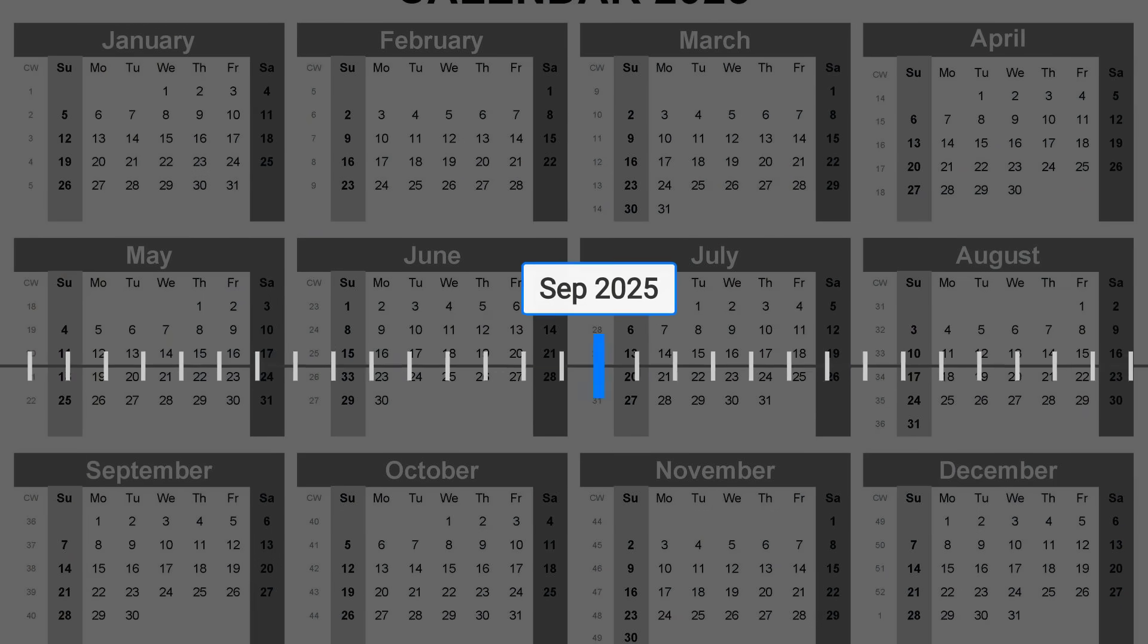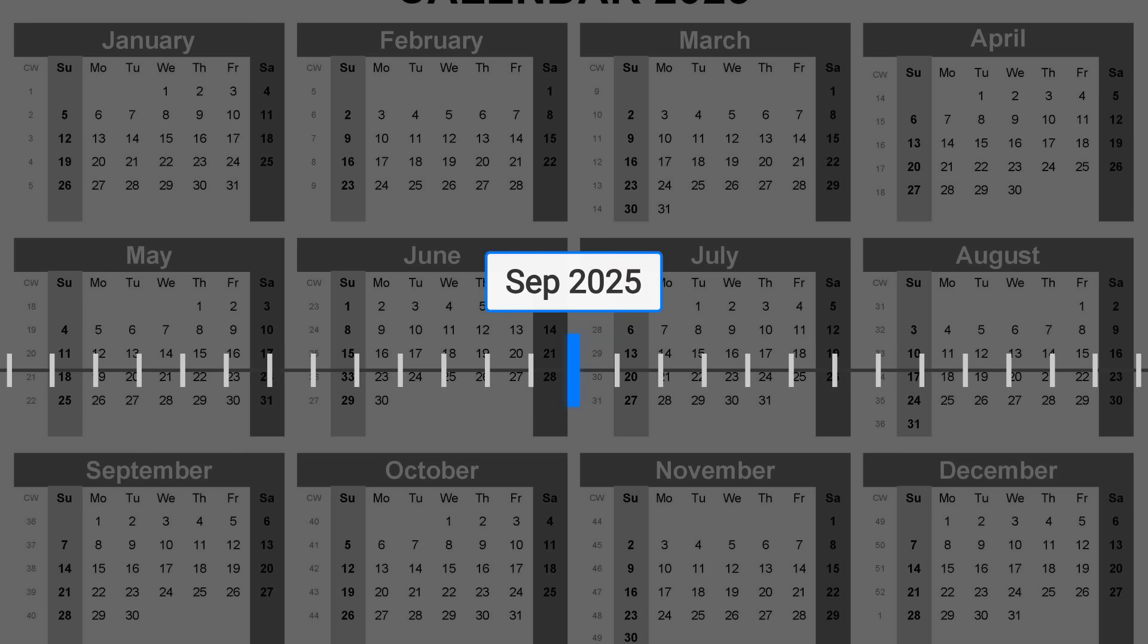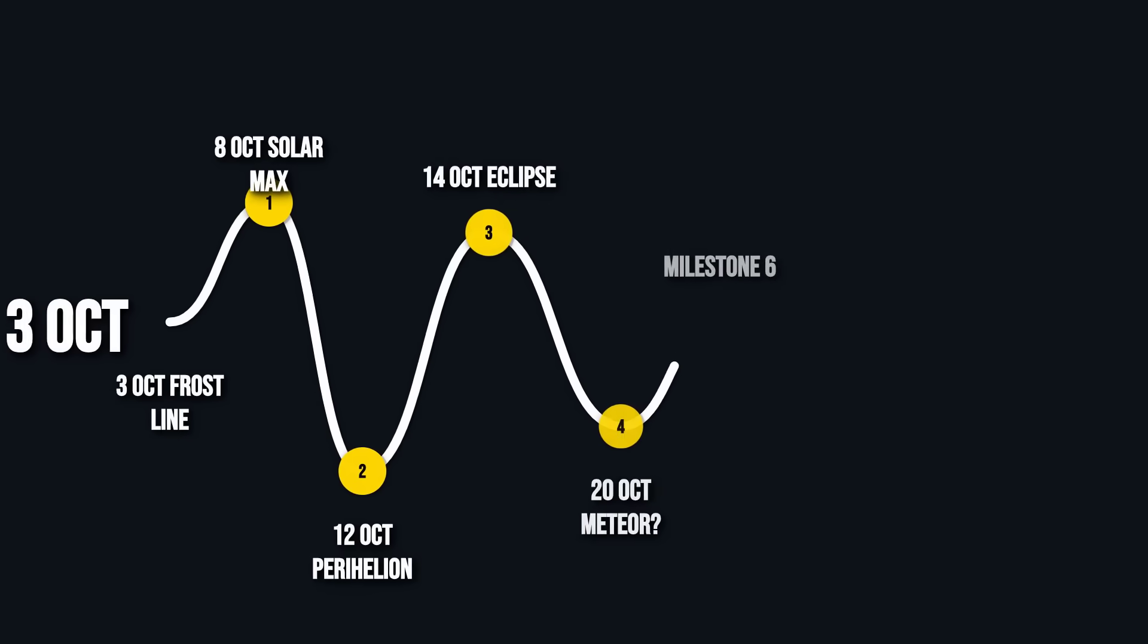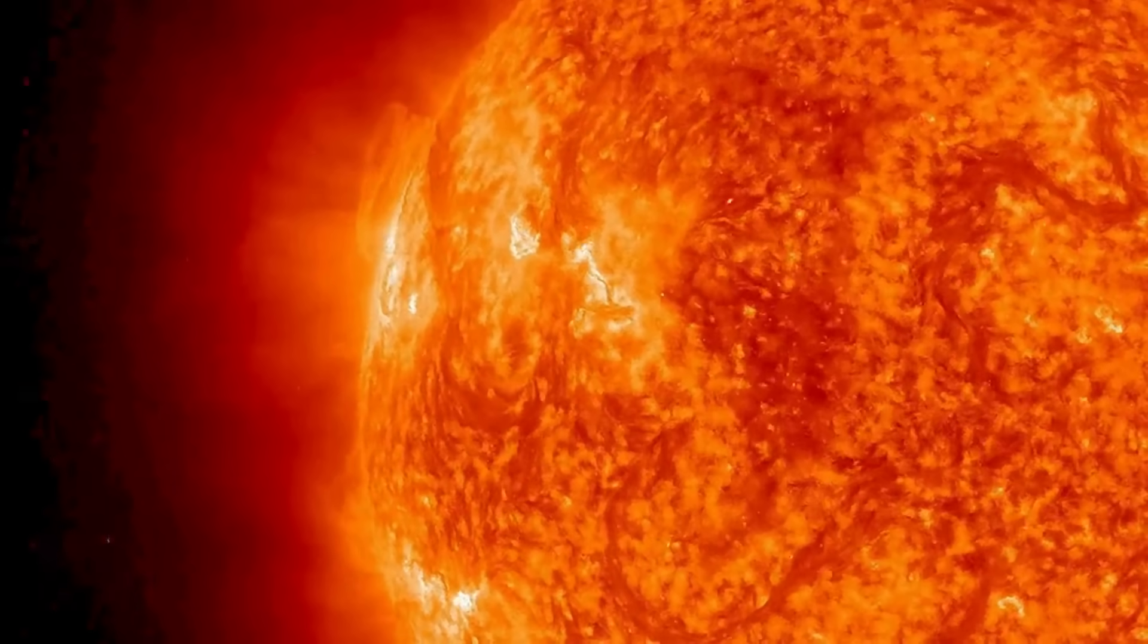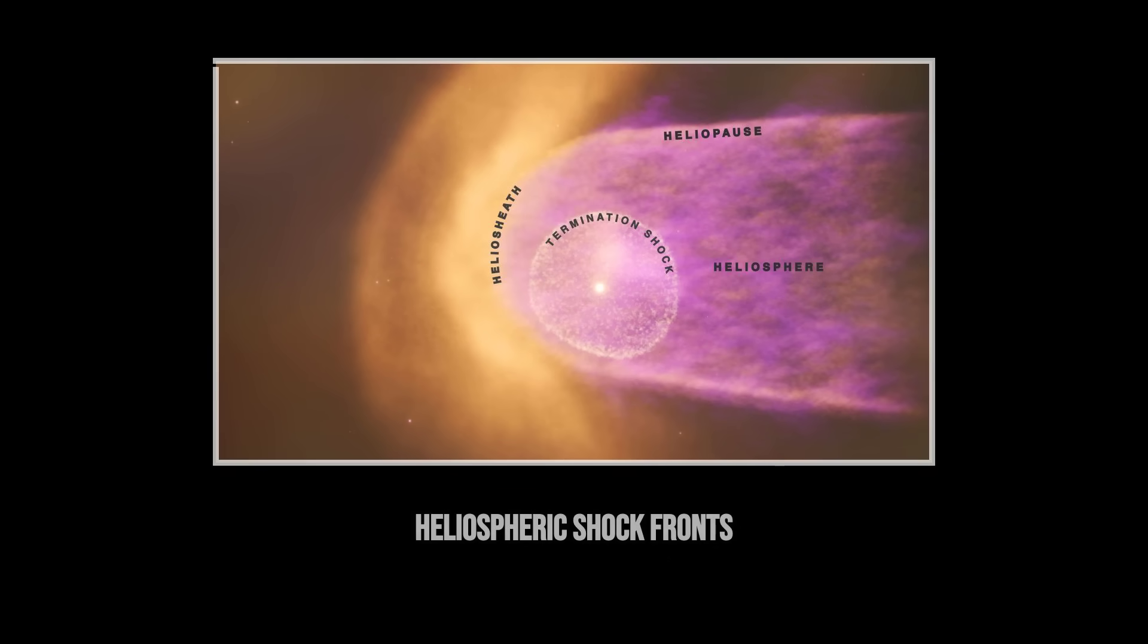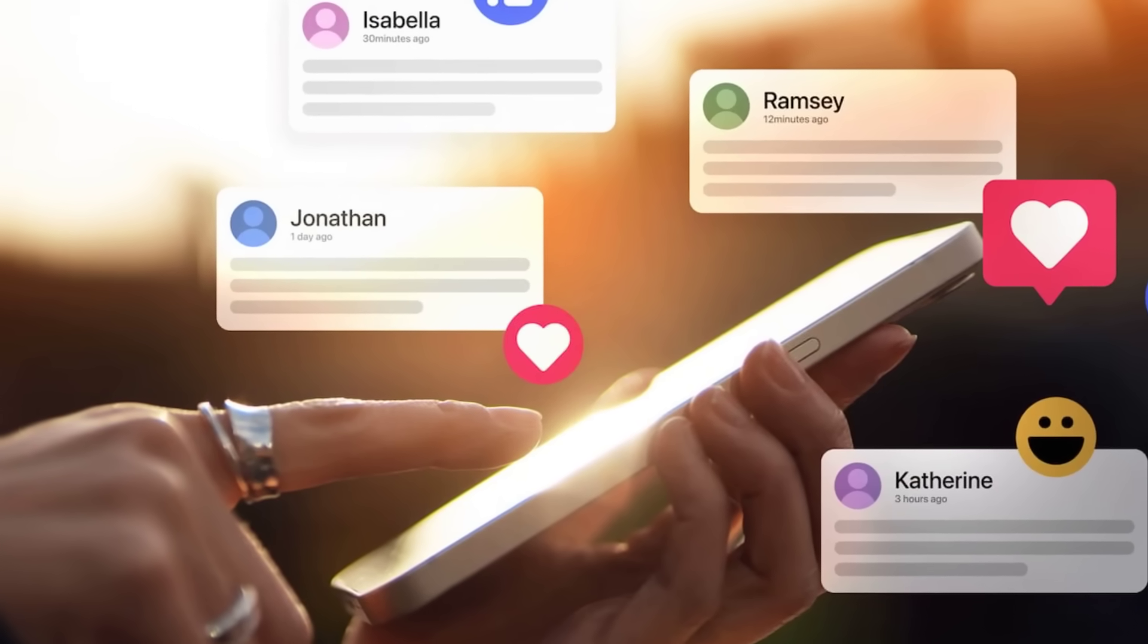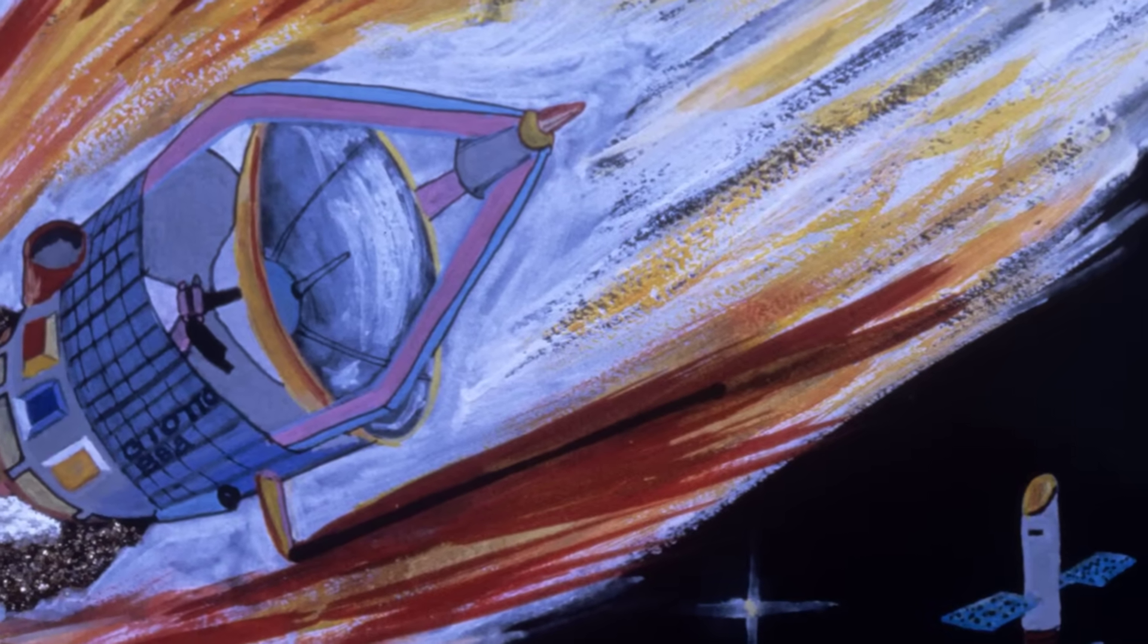Then, right at the end of the month, October 29th and 30th, 3I-Atlas reaches perihelion, its closest point to the sun. The timing couldn't be better or stranger. Solar activity is peaking, and the comet's path keeps it tangled in the most turbulent regions of the heliosphere. All this has fueled a wave of speculation online. Viral posts claim the comet is more than just a rock. Some even call it a superintelligence, or suggest it could influence the sun.